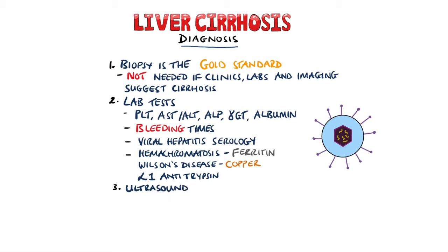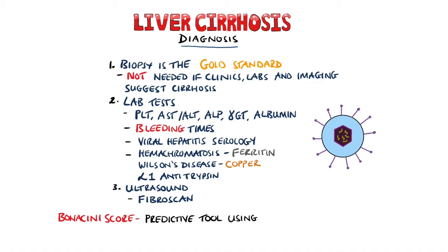Ultrasound is useful in the evaluation of cirrhosis because it can evaluate the portal system. FibroScan is a device based on ultrasound that evaluates liver stiffness by sending a pulse through the liver. The Bonaccini score is a predictive tool that uses platelet count, aminotransferase ratio, and INR to give a cirrhosis probability.